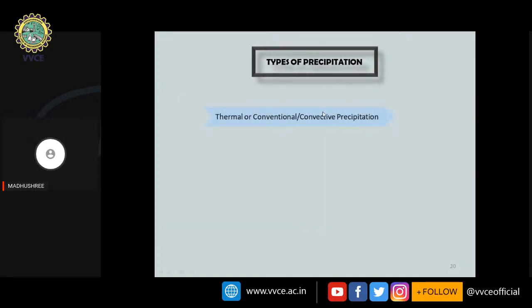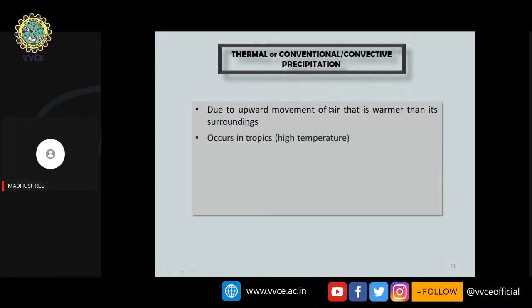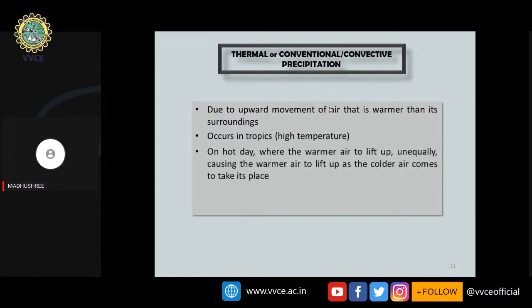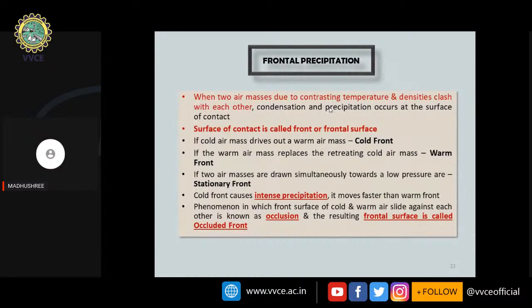Types of precipitation include: convective precipitation, frontal precipitation, orographic precipitation, and cyclonic precipitation. Convective precipitation occurs due to upward movement of air warmer than its surroundings, typically in high-temperature regions or tropics. Warmer air lifts unequally as cooler air takes its place, cools to form a cauliflower-shaped cloud, and finally bursts into thunder.